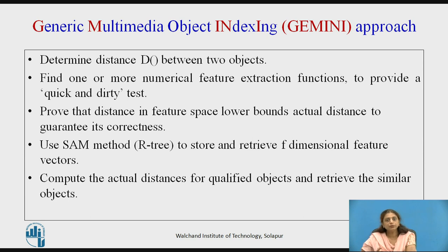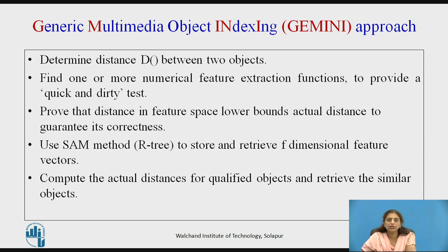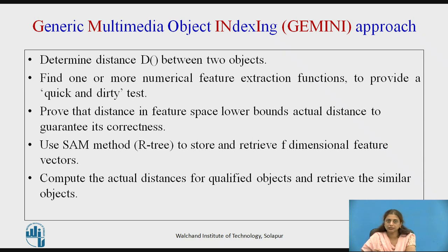In the previous lecture we already saw what the Gemini approach means and what its steps are. First, we have to decide the distance function. Second, we find features for applying the quick and dirty test. Third, we prove the selected features are correct using the lower bound lemma. Fourth, use a special access method to store and retrieve f-dimensional features, and then compute actual distances for qualified objects and retrieve the result.